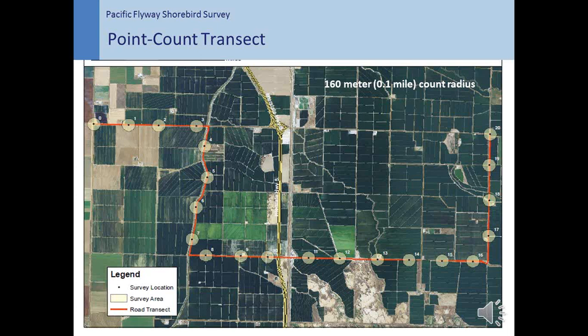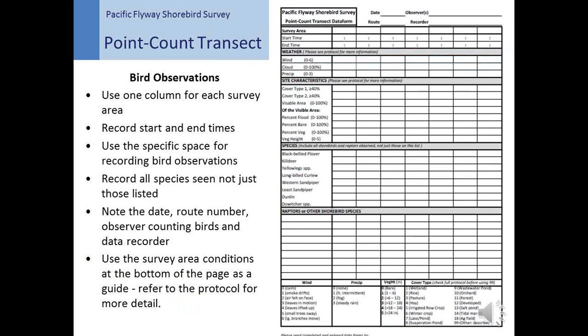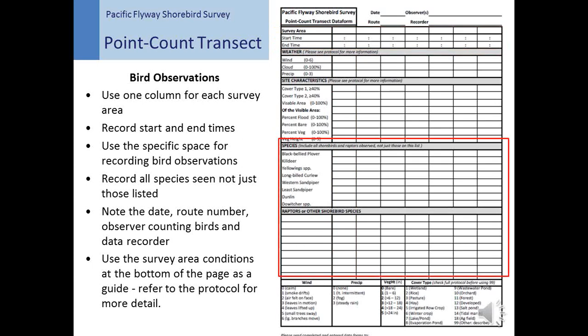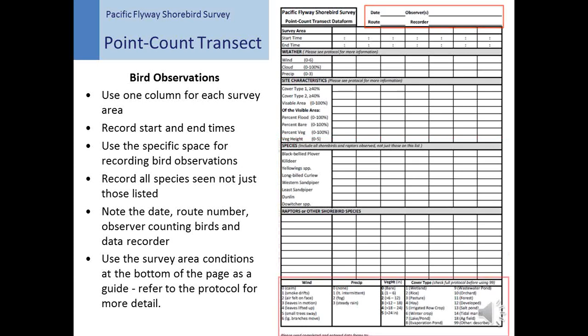Observers are asked to count from one location only. The datasheet for the point count transect consists of multiple columns. Each column represents one survey area along the point count transect. Start and end times should be recorded for each survey area. Bird observations are recorded in the lower half of the datasheet. Some of the more common species are listed on the left side of the datasheet. Use the lower portion to fill in other shorebird species and raptors seen during your surveys. The date, route number, observer, and recorder information is entered in the upper right side of the datasheet. The bottom of one side contains a cheat sheet for survey area condition data, and the other side contains a section for your notes. Please refer to the formal protocol for more detail on the categories of survey area conditions.